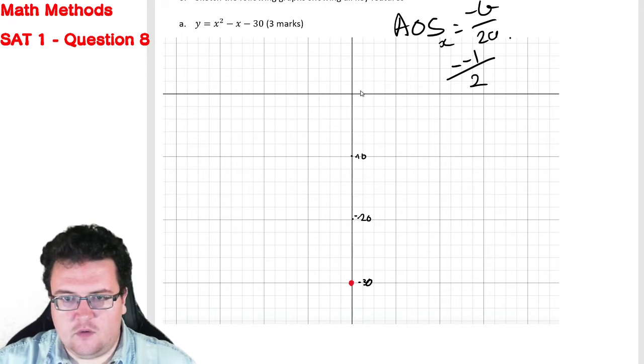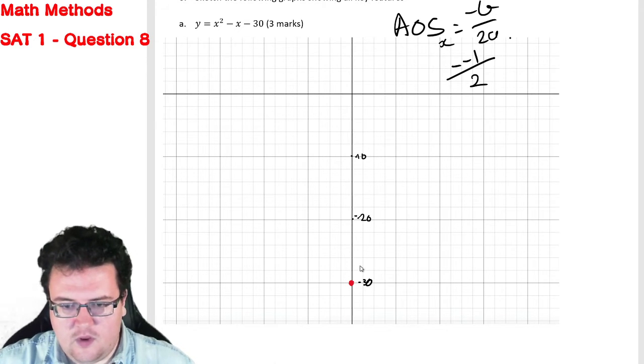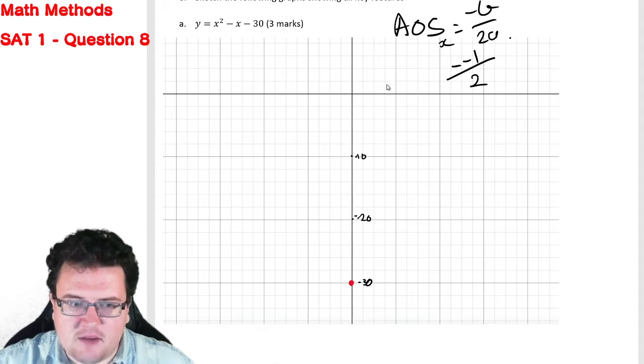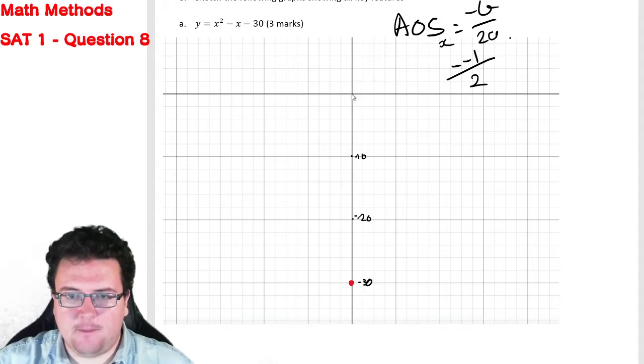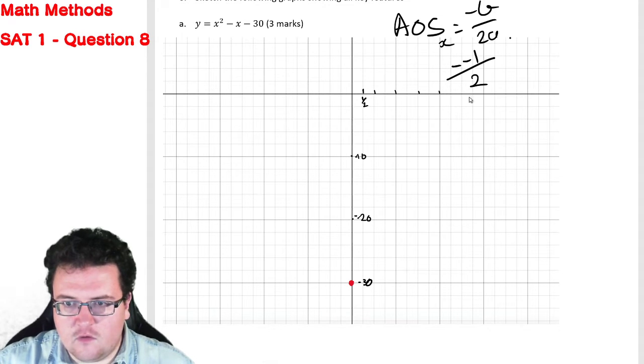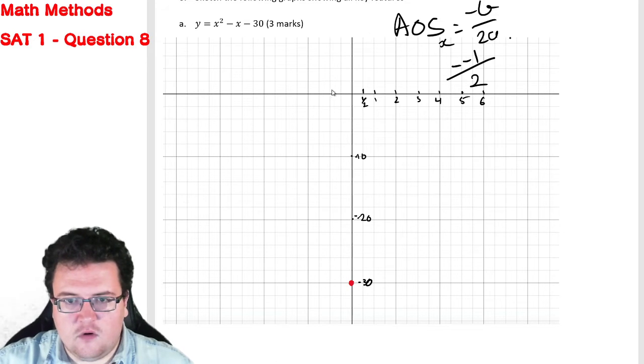So our turning point is actually... just to make my life a little easier, we're going to say this is a half. So therefore that's 1, 2, 3, 4, 5, 6. And therefore, this will be the negatives.